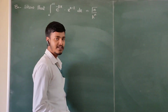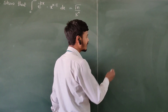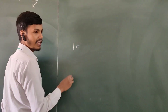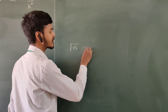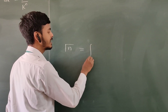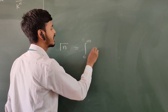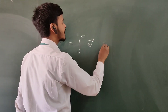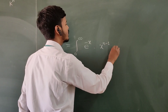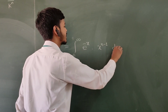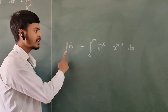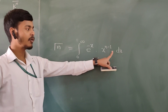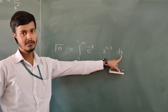Let us recollect the definition of gamma function. What is gamma function of n? Gamma function of n is the integration from 0 to infinity of e to the power minus x into x to the power n minus 1 dx. You can write the same definition in terms of x or in terms of t.